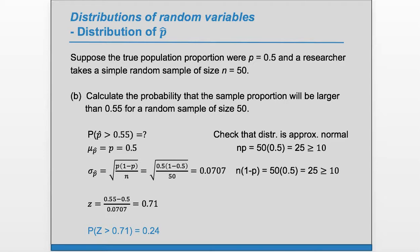So this probability is 0.24. The probability that our sample proportion ends up bigger than 0.55 is about 0.24.